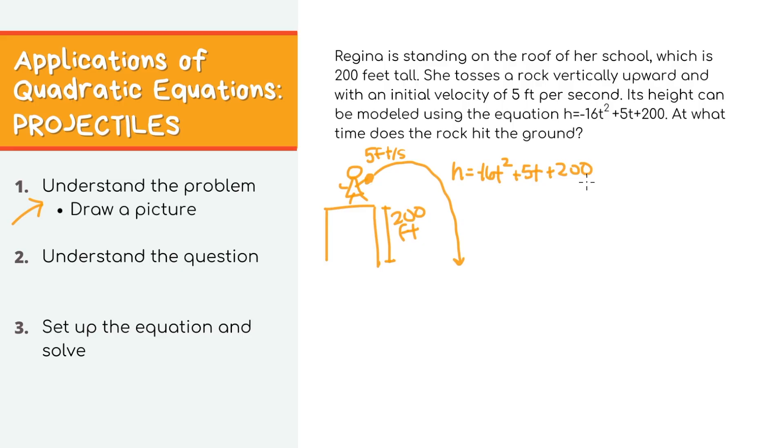For example, if you plug in 30 for t, you'll get the height of the rock at 30 seconds after she throws it. Okay, I think we understand everything here, so let's now try to understand the question. At what time does the rock hit the ground? Well, logically, the rock hits the ground when the height is equal to zero, because the rock will be zero feet off the ground.